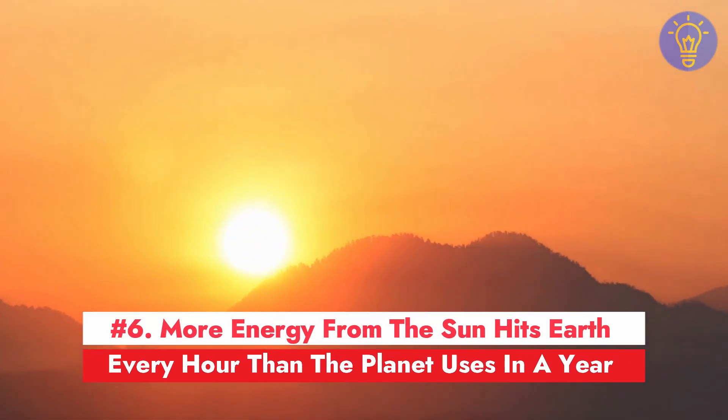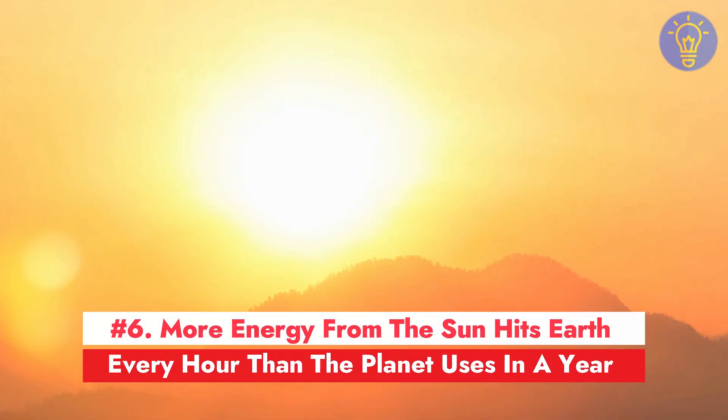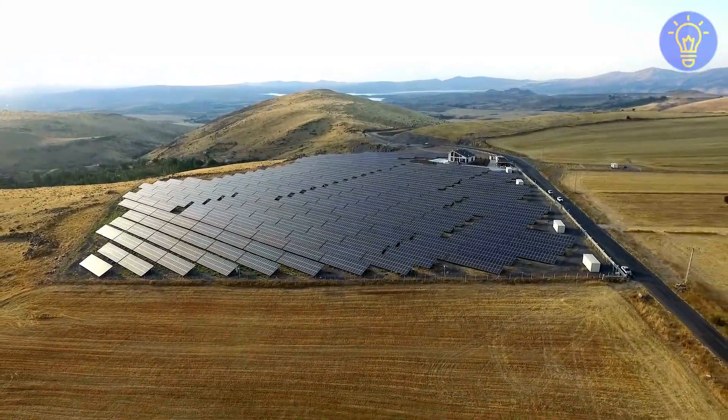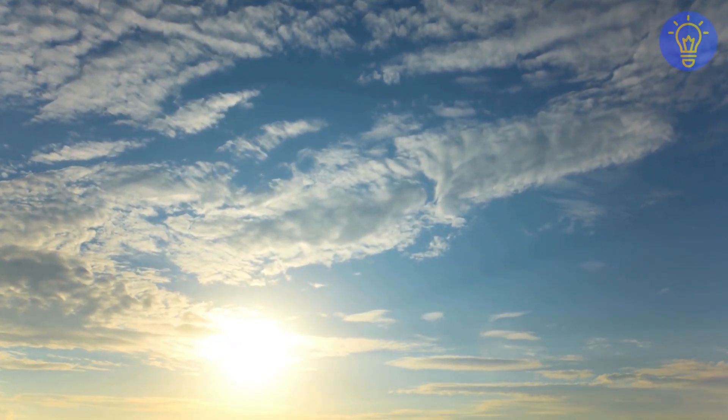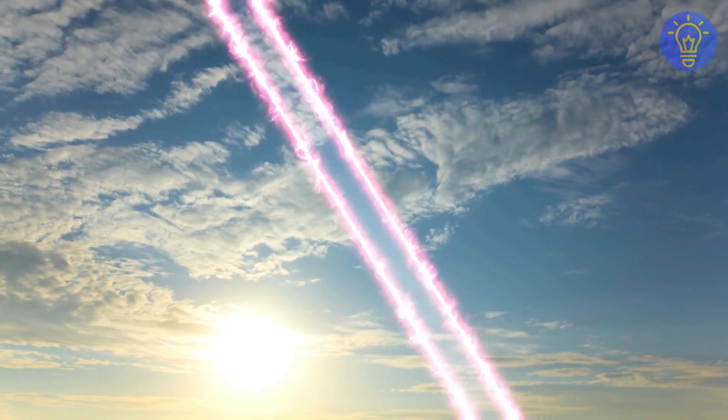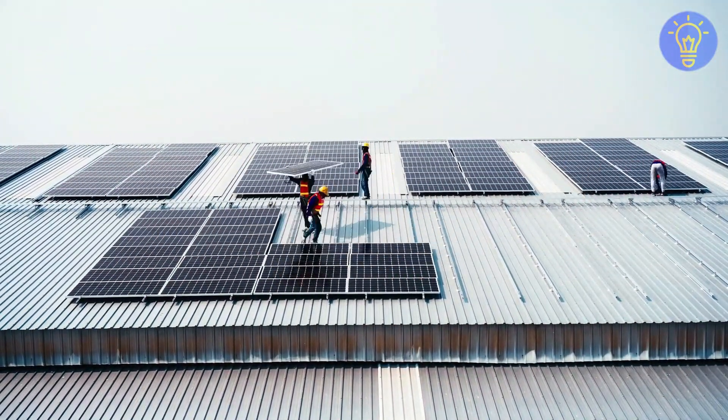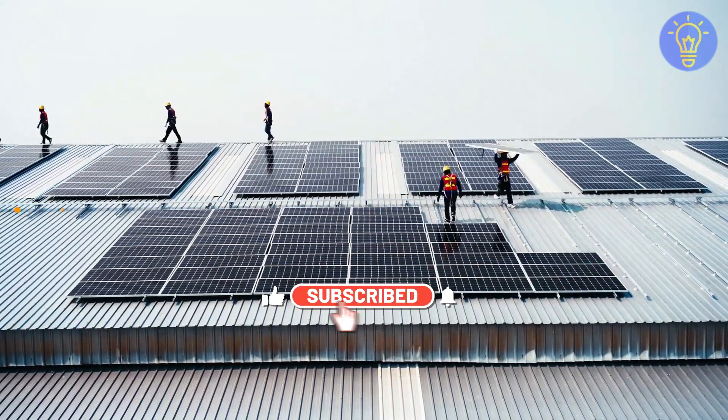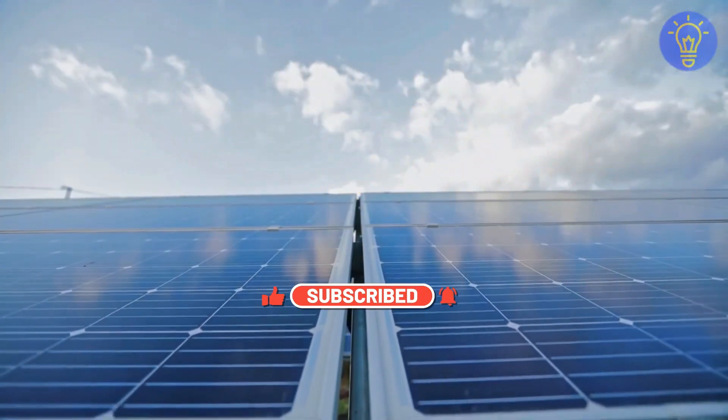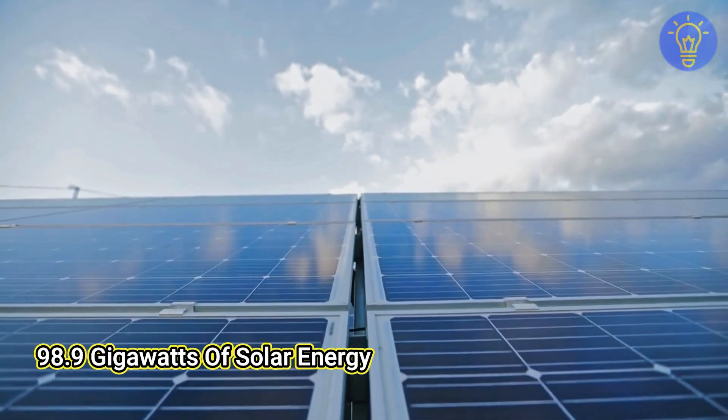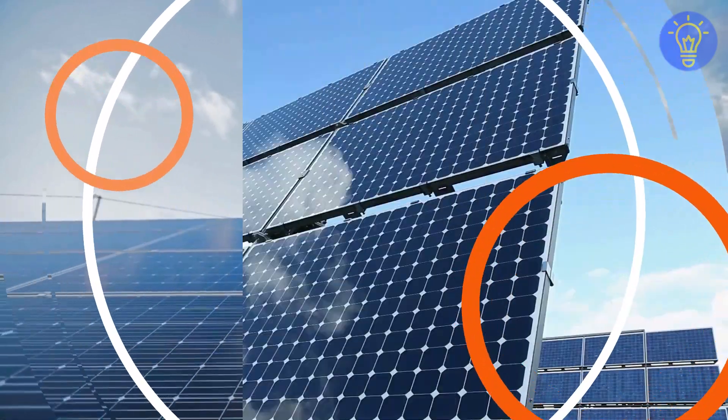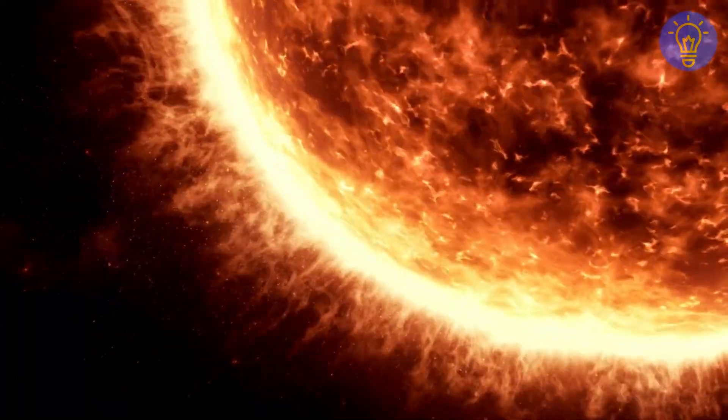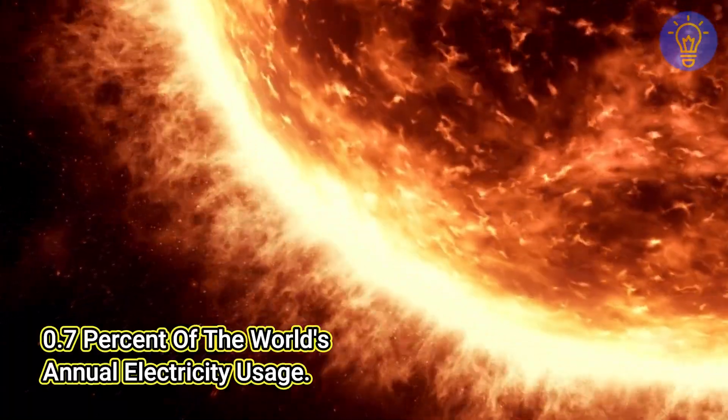Number 6. More energy from the sun hits Earth every hour than the planet uses in a year. The use of solar energy has increased at a rate of 20% each year for the past 15 years. According to Yale Environment 360, the world added 30% more solar energy capacity in 2017, meaning 98.9 gigawatts of solar energy were produced that year. Despite the seemingly large number, this amount of energy only accounts for 0.7% of the world's annual electricity usage.